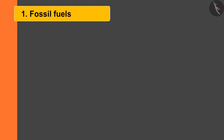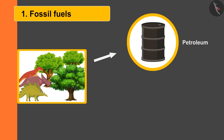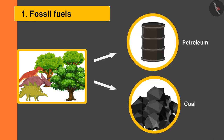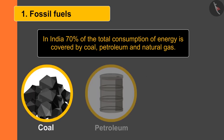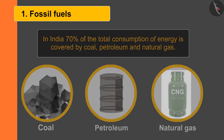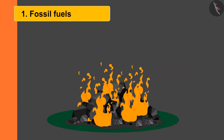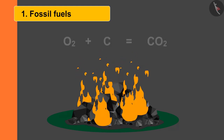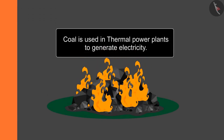Let us understand what fossil fuels are. Millions of years ago, living beings on Earth got buried under various layers of earth. Due to high temperature and pressure, some of them got converted into petroleum and others got converted into coal. In India, 70% of the total energy consumption is covered by coal, petroleum, and natural gas. Coal is the largest source of carbon. When coal burns in air, it reacts with oxygen to form carbon dioxide. Various components of petroleum like petrol and diesel are used in different ways as per their needs.